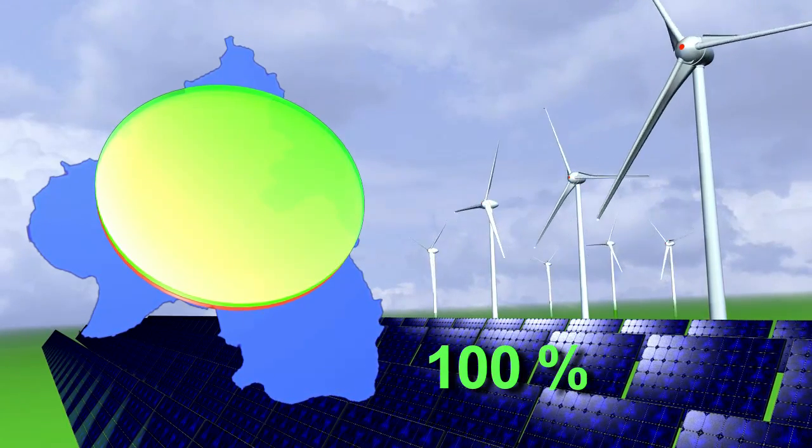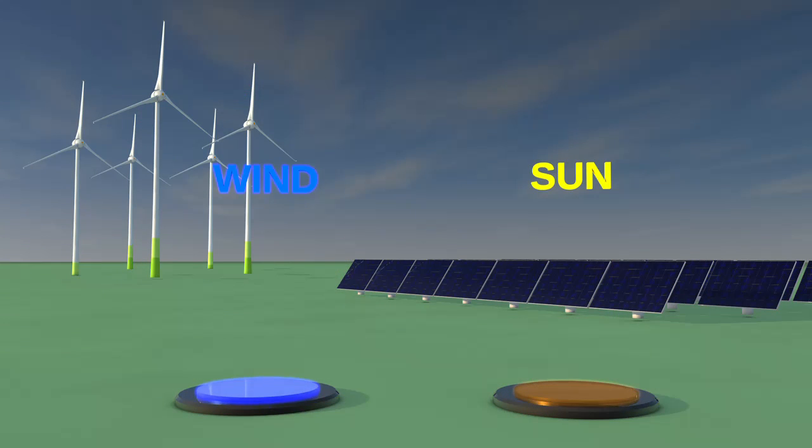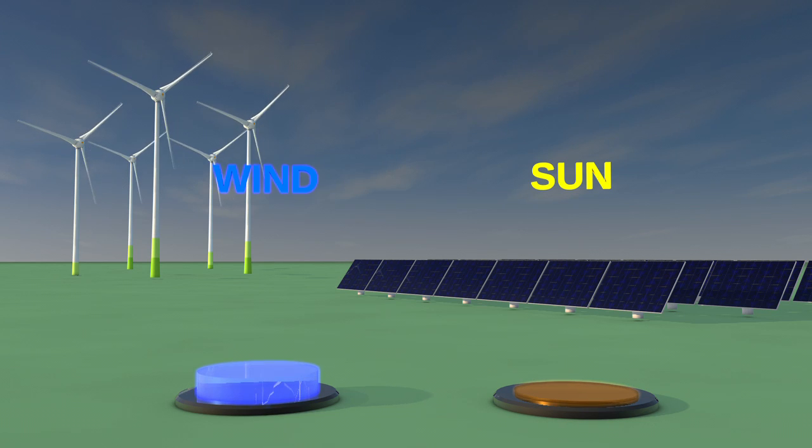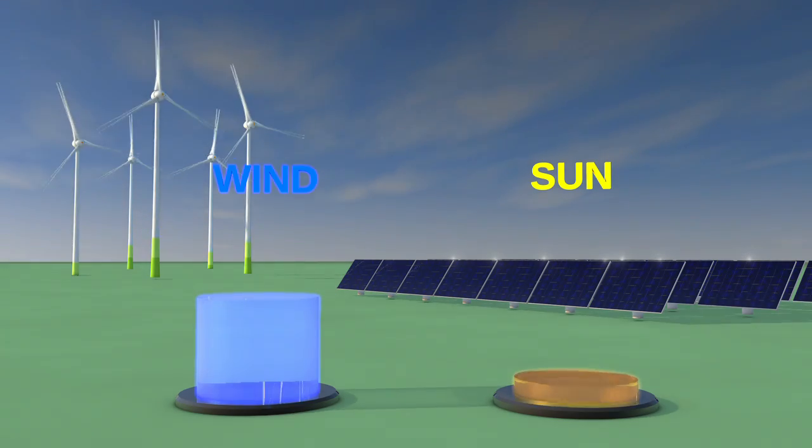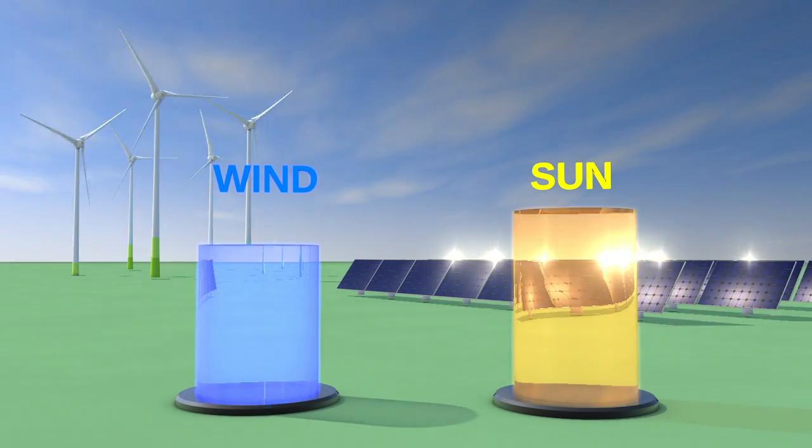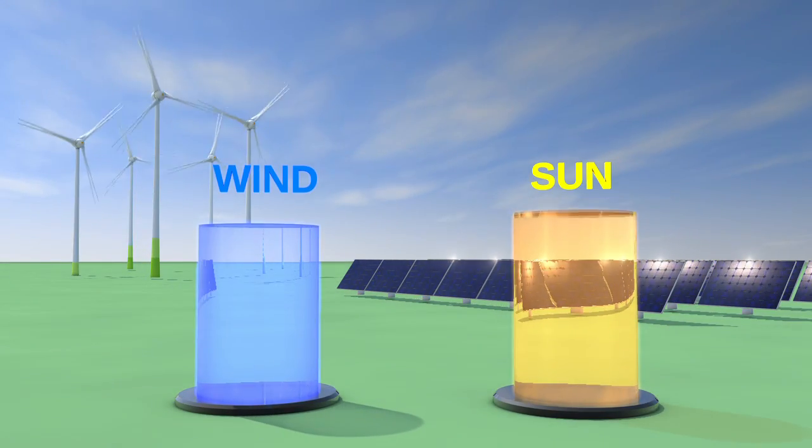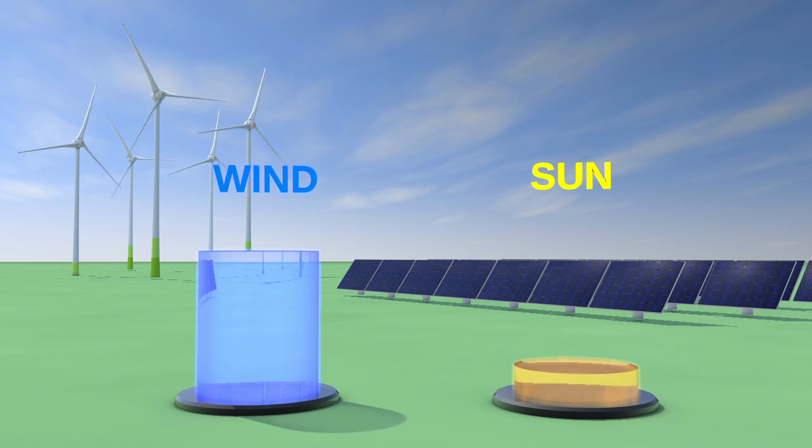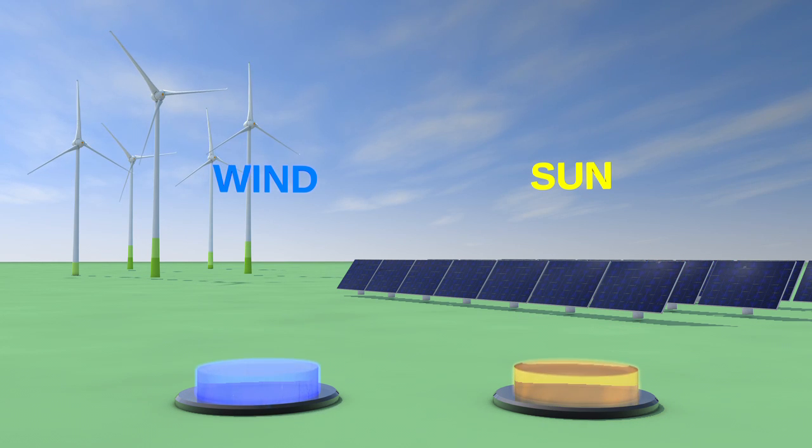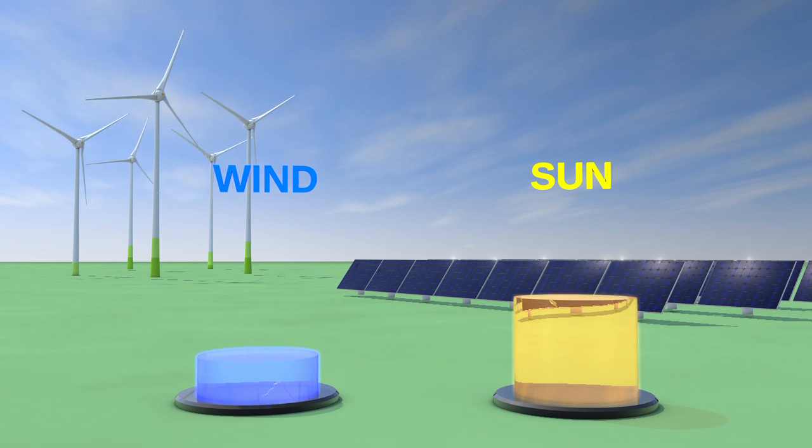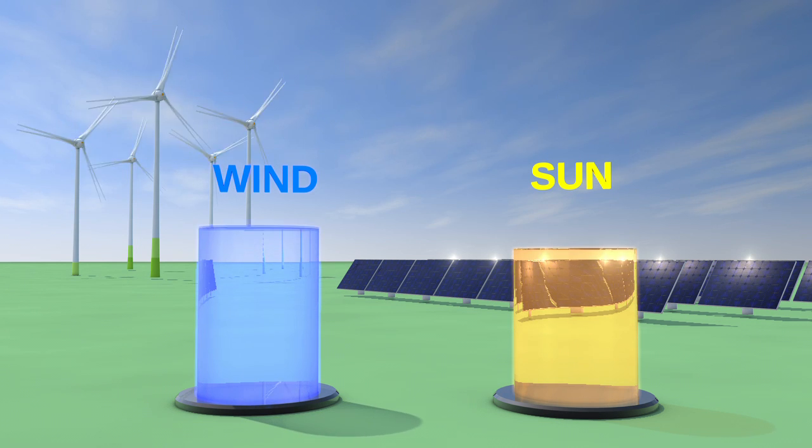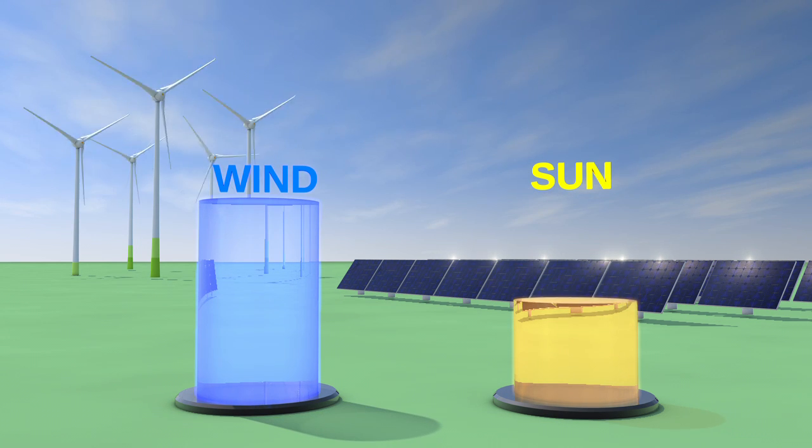But what if power is needed at a time when the wind is not blowing? Energy generated from wind and solar power plants obviously fluctuates depending on weather conditions. Wind and sunlight are not always dependably available. Therefore, energy produced by such means must be made storable through conversion in order to have it at the ready whenever required.